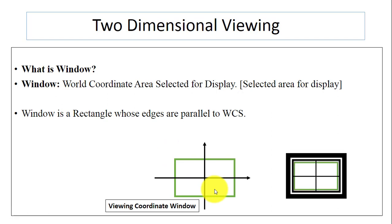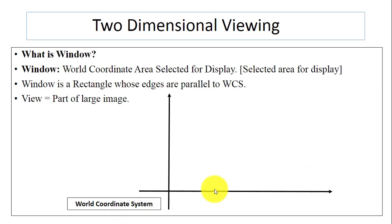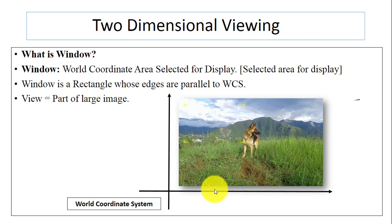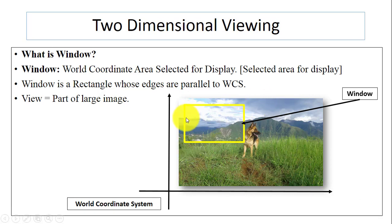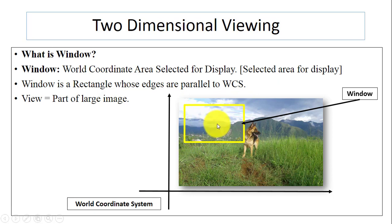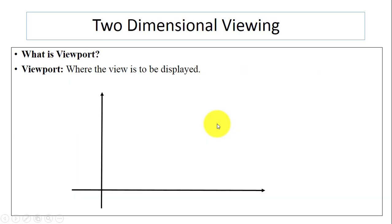Now, what is a view? A view is a part of a large image. Suppose we have a window — it's a rectangle whose edges are parallel to WCS. Inside this window we have the view. So this is the view, which is the part of the large image.